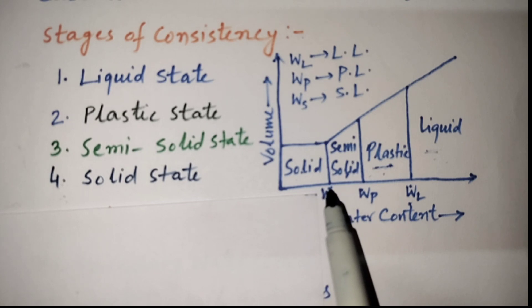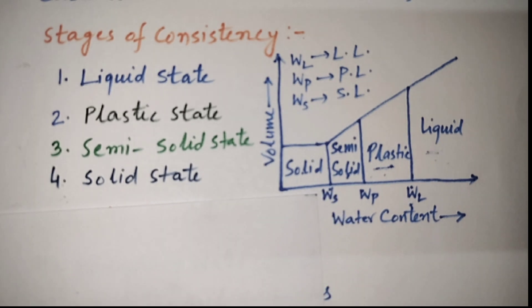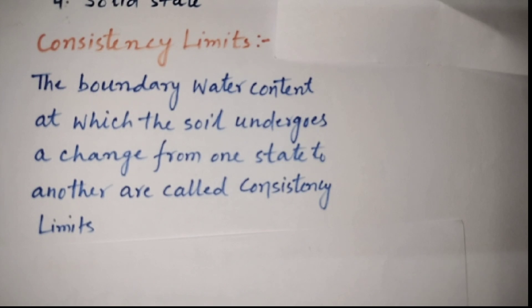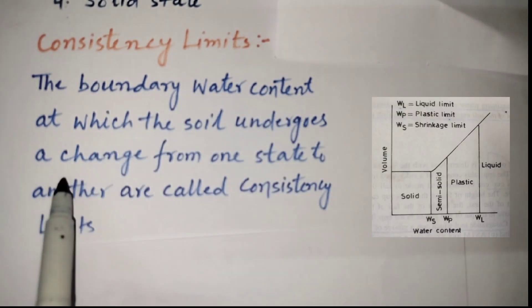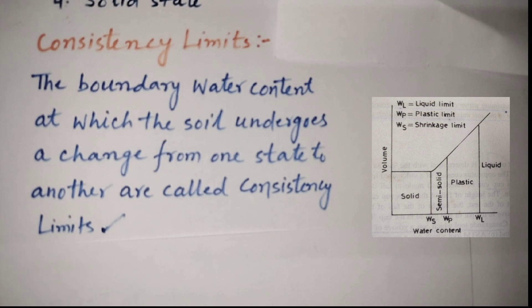We have learned the boundary water content at which the soil undergoes changes from one state to another state are called consistency limits. Here, we can see in the figure the different limits which we have just learned earlier.